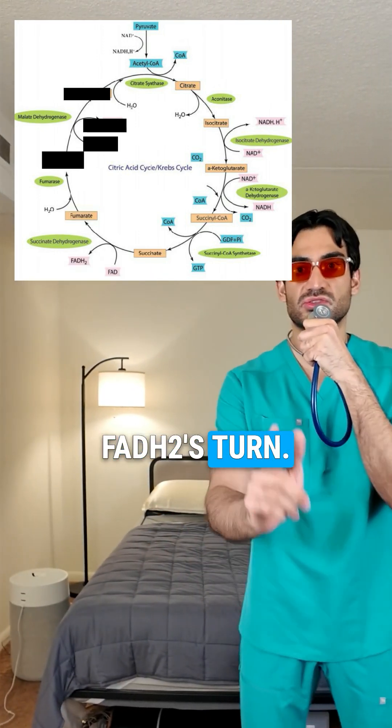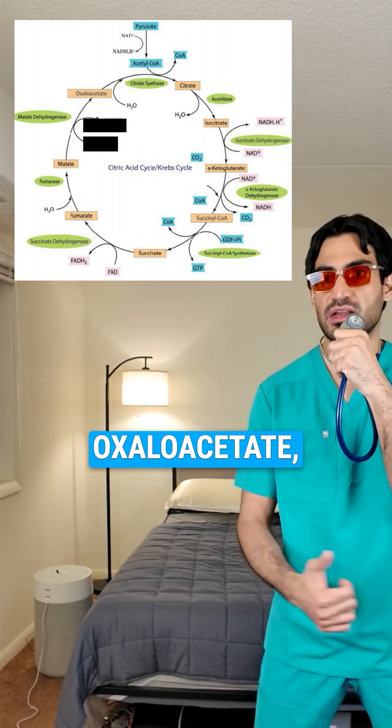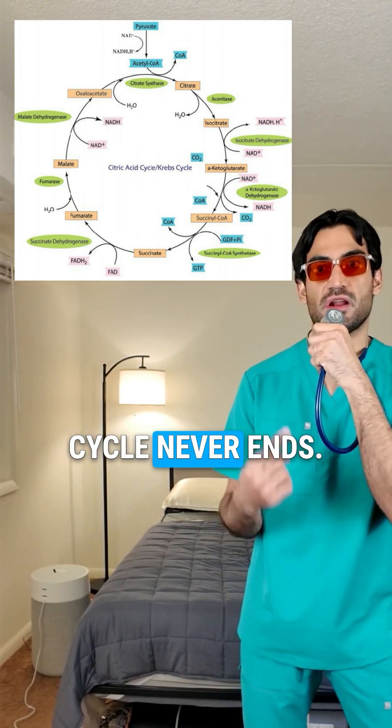Succinate to fumarate, FADH2's turn. Malate to oxaloacetate, NADH we earn. Round and round, the cycle never ends.